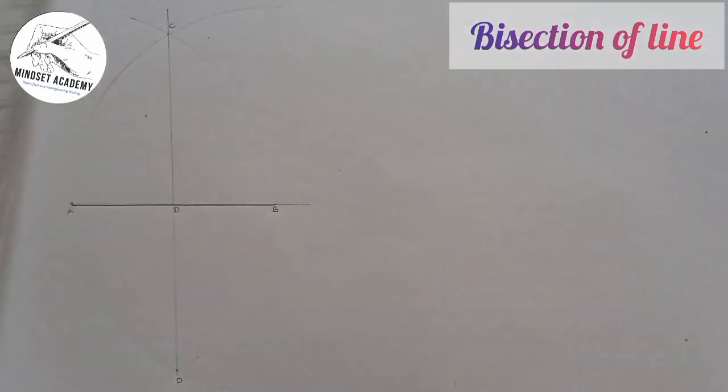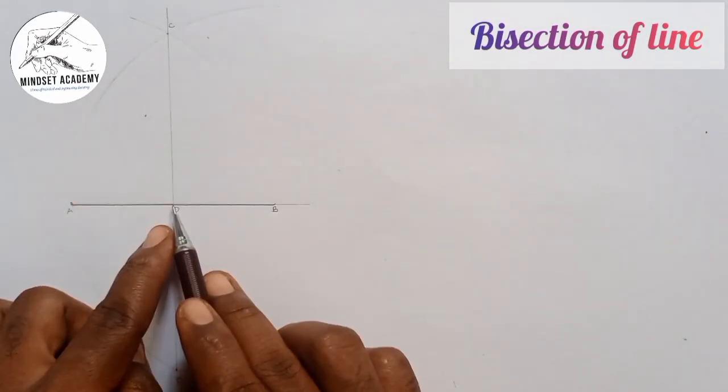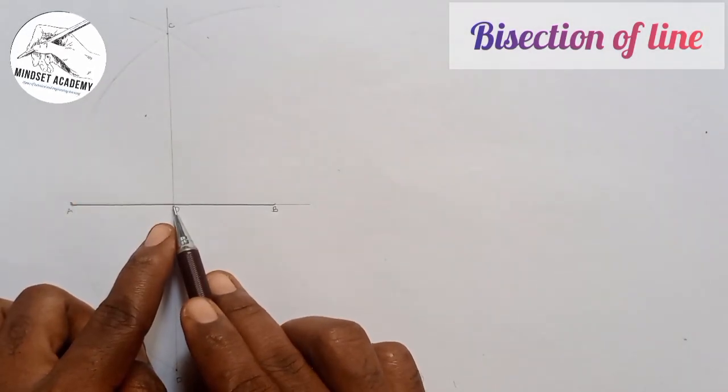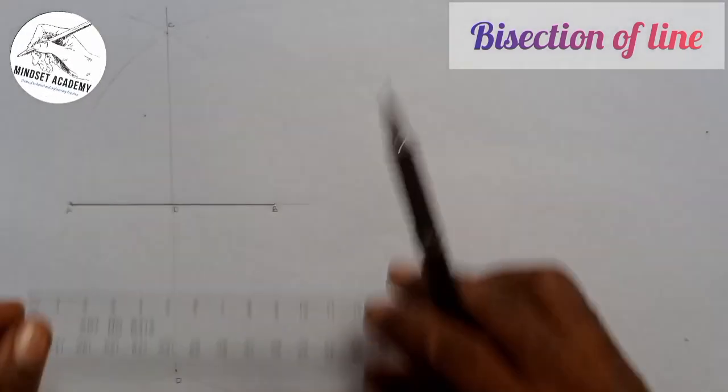Bisect means you're dividing it into two different parts. If you measure from here to here it will be equal to from here to here. Let's take the analysis and see. Since here to here is 80, automatically A to D should be 40.